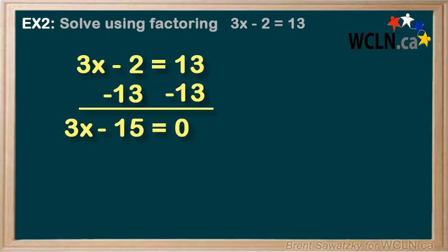Let's factor the left hand side and we can see we have a greatest common factor that is 3 and we can pull a 3 out of both of these terms. So 3 times x minus 5 equals zero.